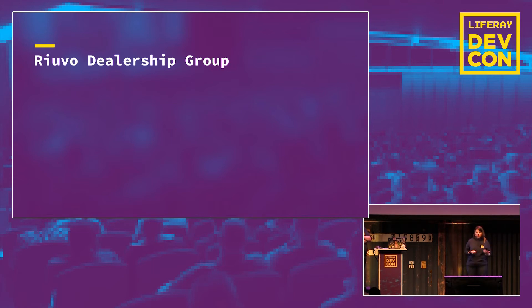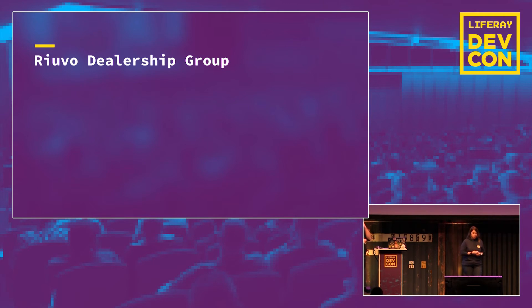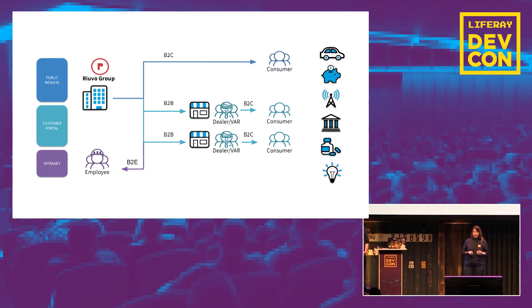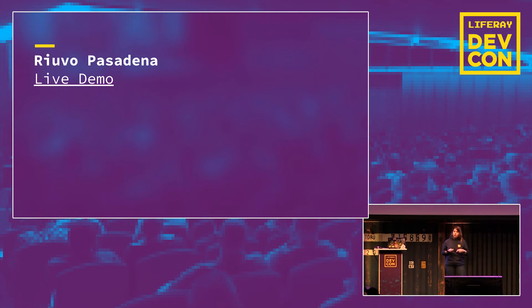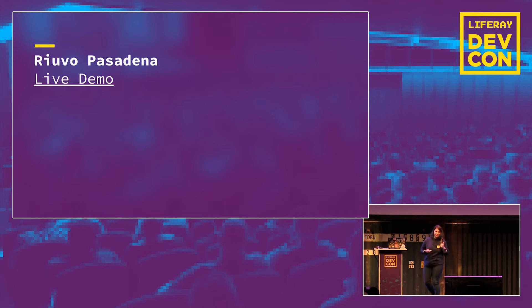Let me provide a little context on the use case we'll be using today, which is the same use case some colleagues will use later in sessions on the experience management framework. We'll be using RiUVO — a fictitious car brand with a group of related but independent sites built to serve different business needs, including a public website, customer portals, and an employee intranet. We'll focus on the RiUVO Pasadena dealer website, as it best showcases our features.